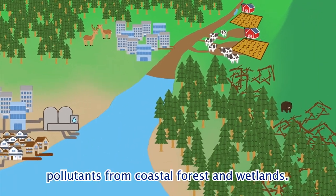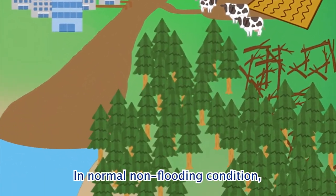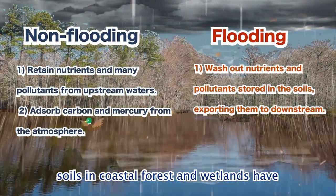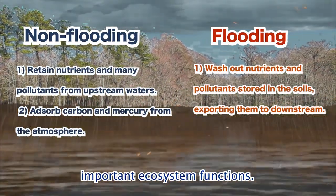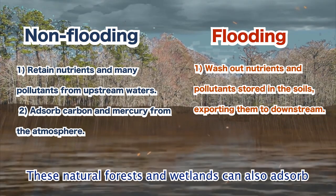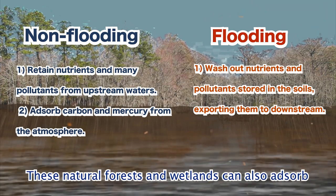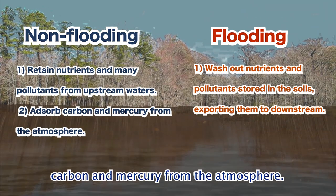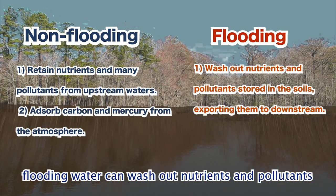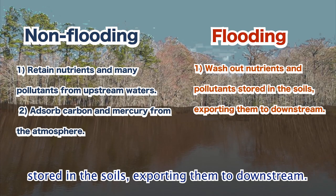Floodwater can also wash pollutants from coastal forests and wetlands. In normal non-flooding conditions, soils in coastal forests and wetlands have important ecosystem functions — they can retain nutrients and many pollutants from upstream waters, and can also absorb carbon and mercury from the atmosphere. However, under flooding conditions, floodwater can wash out nutrients and pollutants stored in the soils, exporting them downstream.